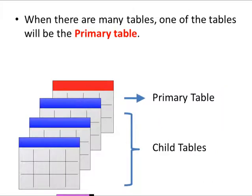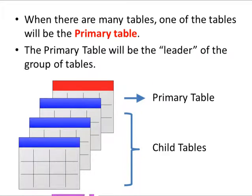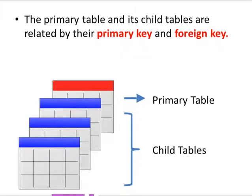When there are many tables, one of the tables will be classified as the primary table, and the other tables are classified as the child tables. The primary table will be the leader or some kind of a representative for the group of tables. The primary table and the child tables are related by their primary key and the foreign key.